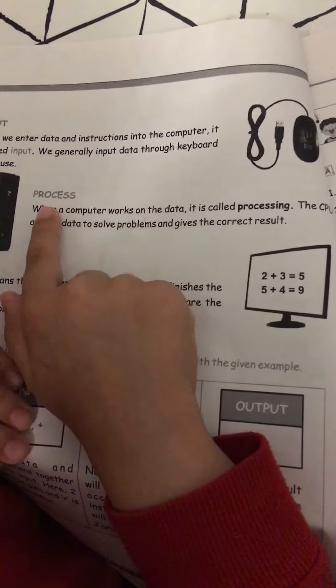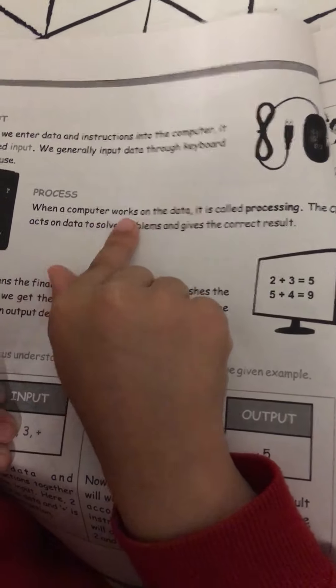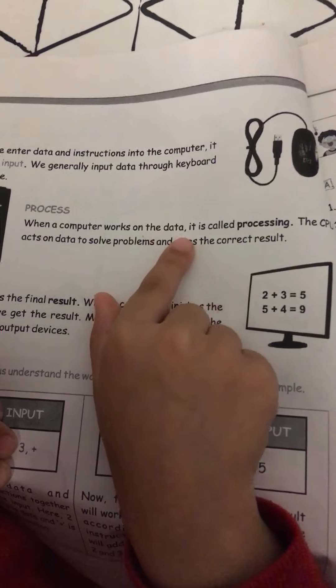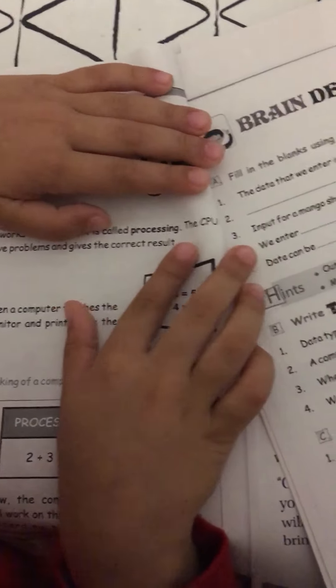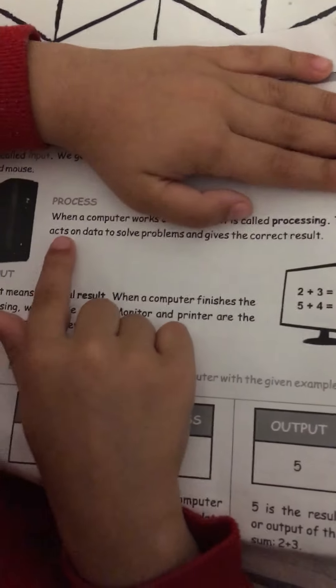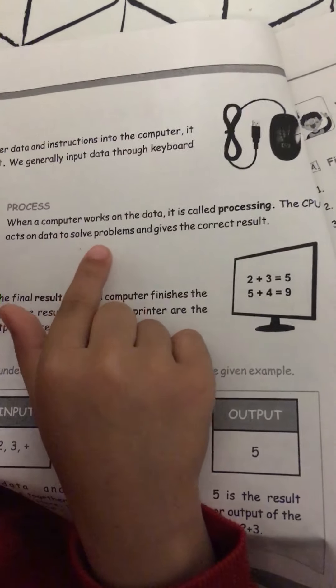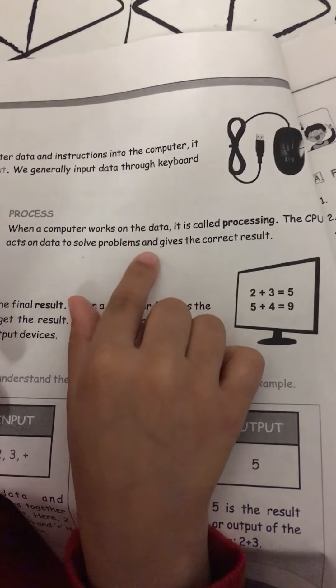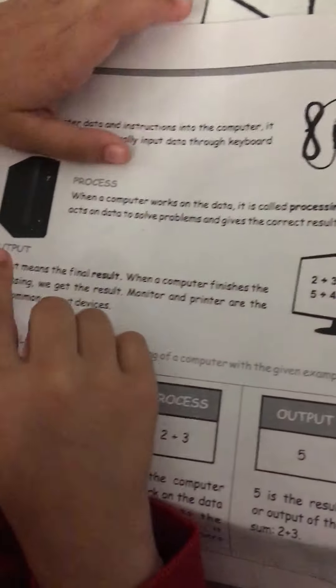Process: when a computer works on the data, it is called processing. The CPU acts on data to solve problems and gives the correct output.